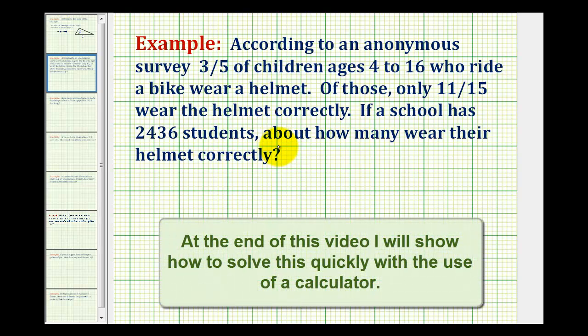We'll have to solve this problem in two steps. First, it says that three-fifths of children who ride a bike wear a helmet. So we first need to determine, of the 2,436 students, how many actually wear a helmet. And the second step will be to determine how many students wear the helmet correctly.